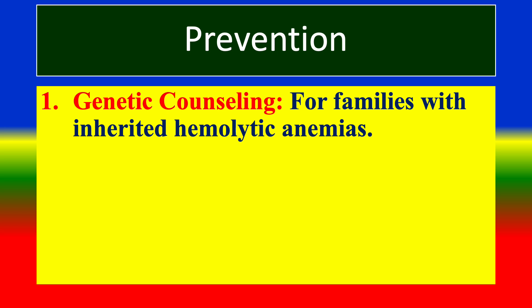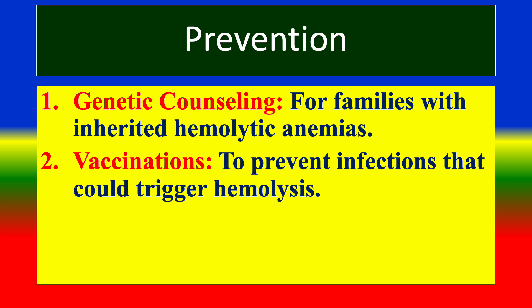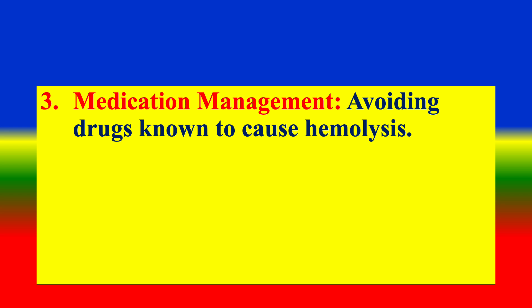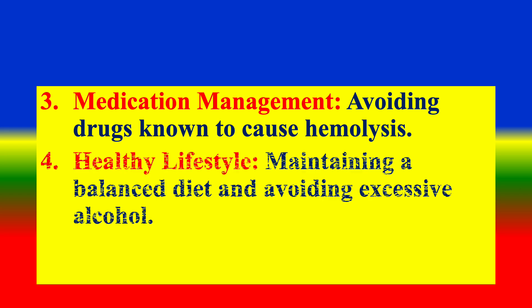Prevention: (1) Genetic counseling for families with inherited hemolytic anemia. (2) Vaccinations to prevent infections that could trigger hemolysis. (3) Medication management — avoiding drugs known to cause hemolysis. (4) Healthy lifestyle — maintaining a balanced diet and avoiding excessive alcohol.